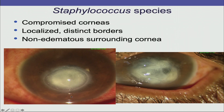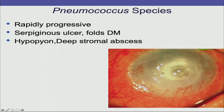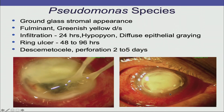Most of the time — at least 70% — you can pick up what the organism is clinically. A punched-out lesion with clear margins and relatively clear surrounding cornea is most likely Staphylococcus with non-edematous surrounding cornea. A rapidly progressive serpiginous ulcer with Descemet membrane folds, hypopyon, and deep stromal abscess is most likely Pneumococcal.